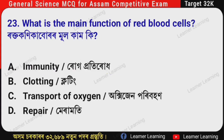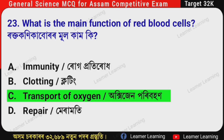Next question: What is the main function of red blood cells? (Assamese: Raktokonika boror mul kam ki?) The correct option is Option C — Transport of oxygen. The main function of red blood cells is to transport oxygen. Remember this.